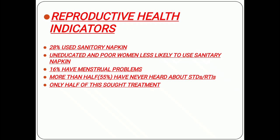The major league of causes of infection in developing countries relates to some reproductive health indicators. Women are more likely to be prone to this infection as they have a more complicated reproductive system. Only 28% of women use sanitary napkins; uneducated and poor women are less likely to use them. 60% have menstrual problems, more than half — 55% — have never heard about STDs and RTIs, and only half of those with infection receive treatment.